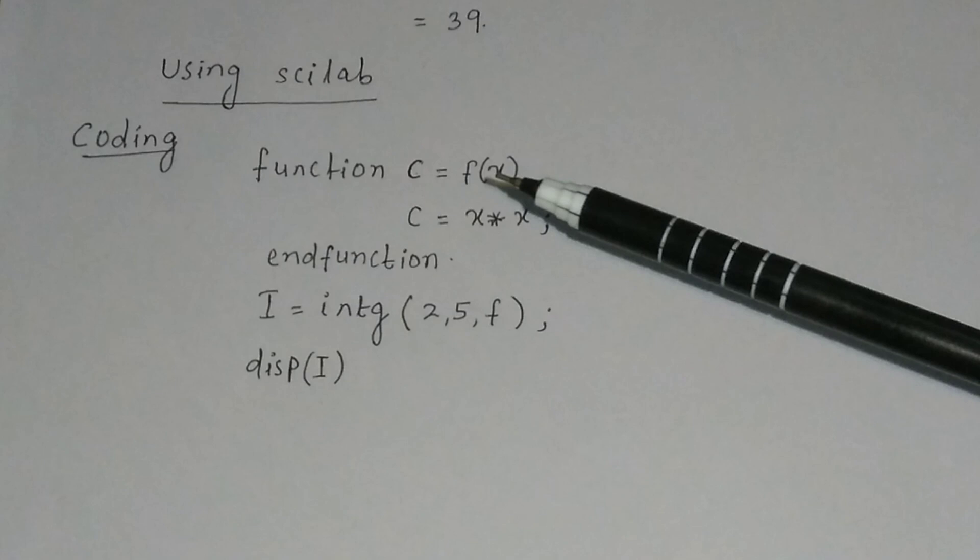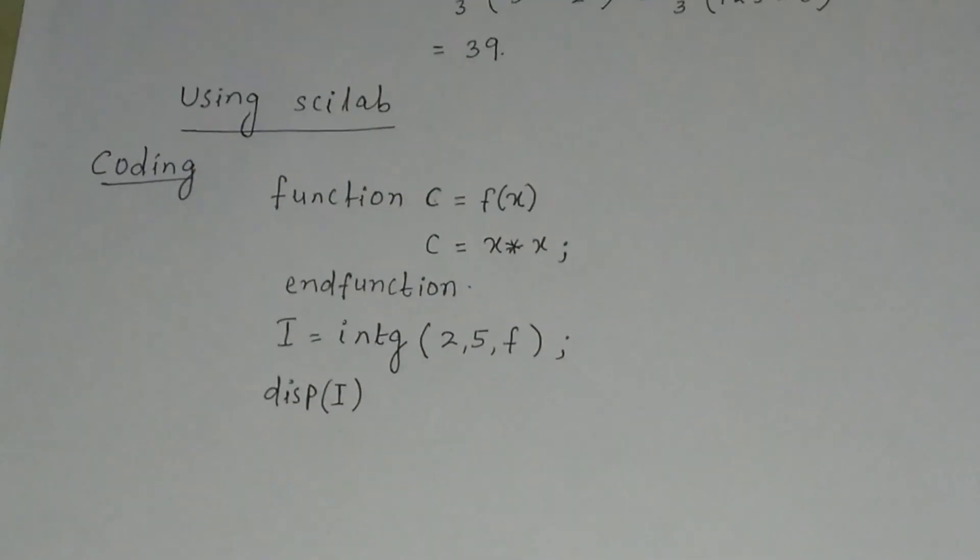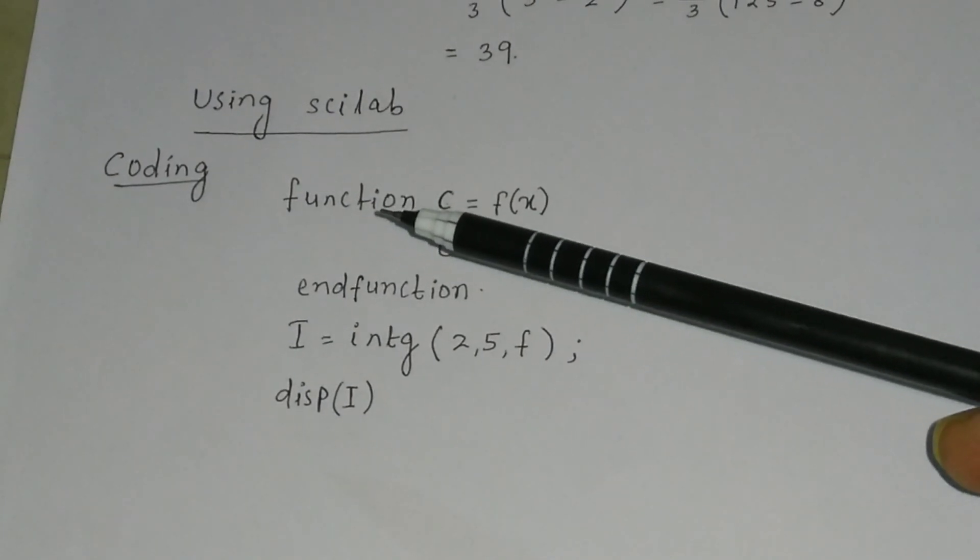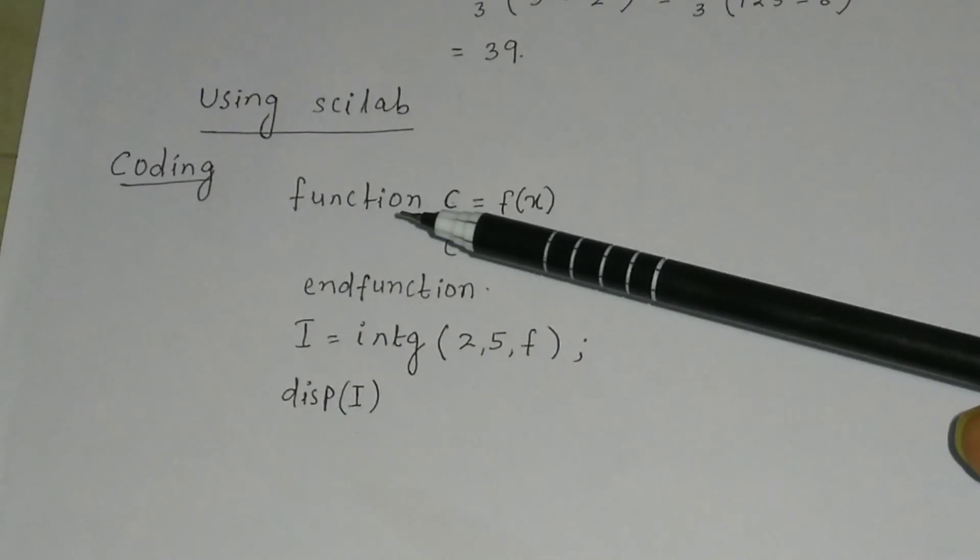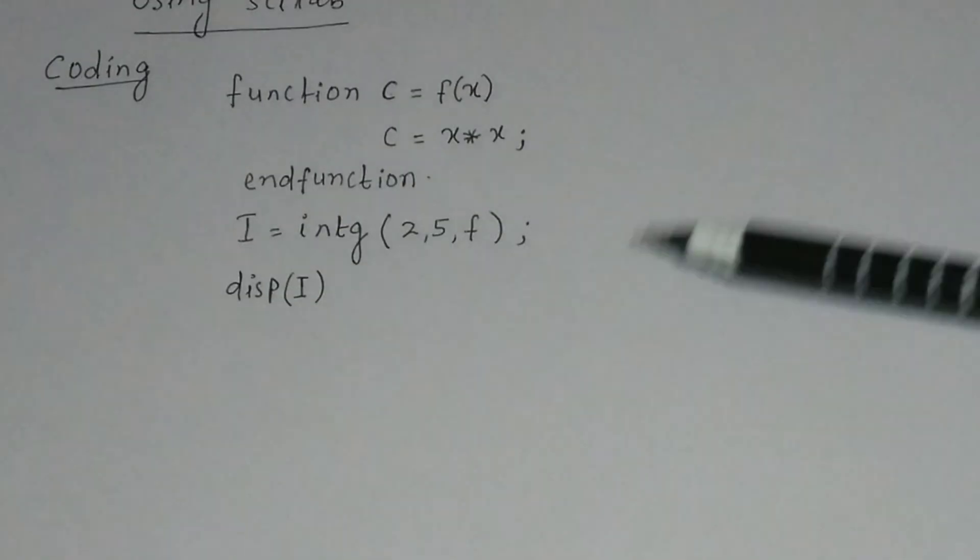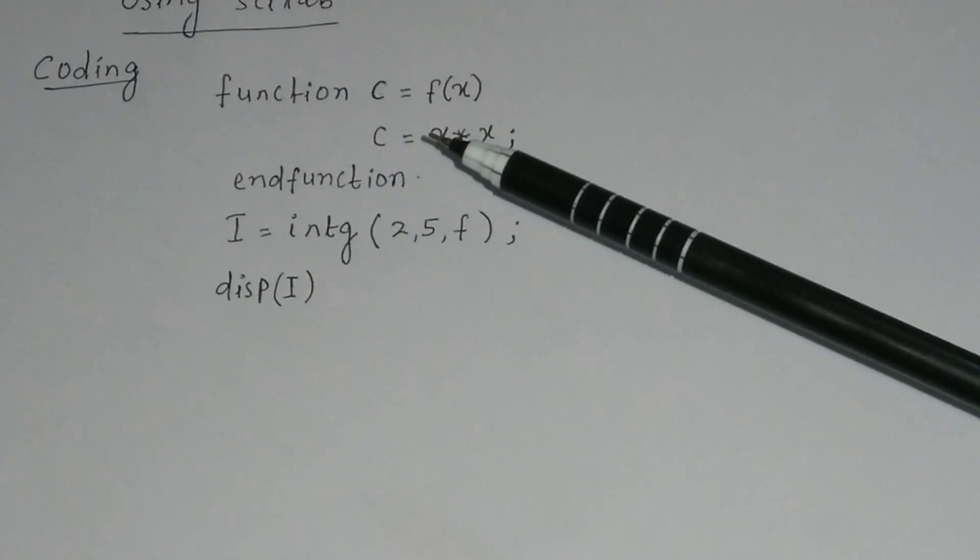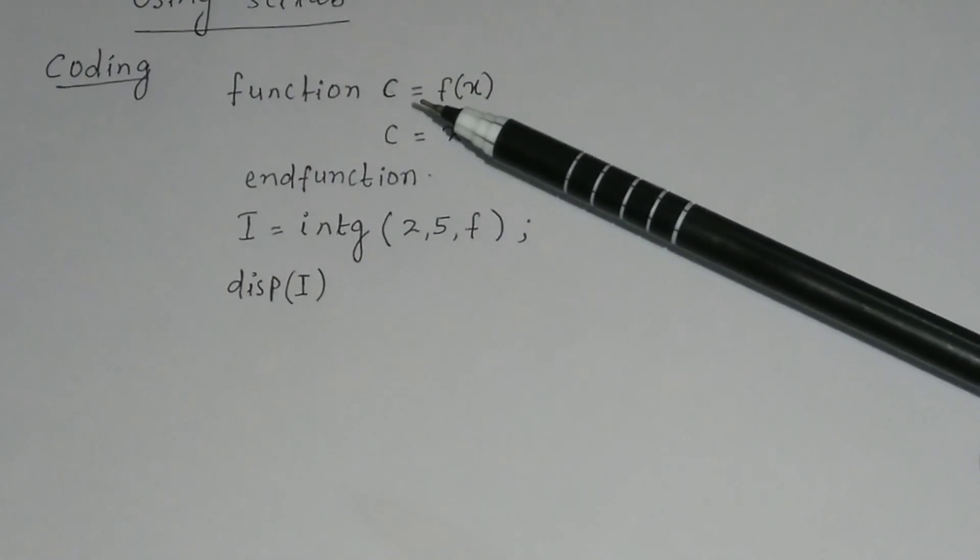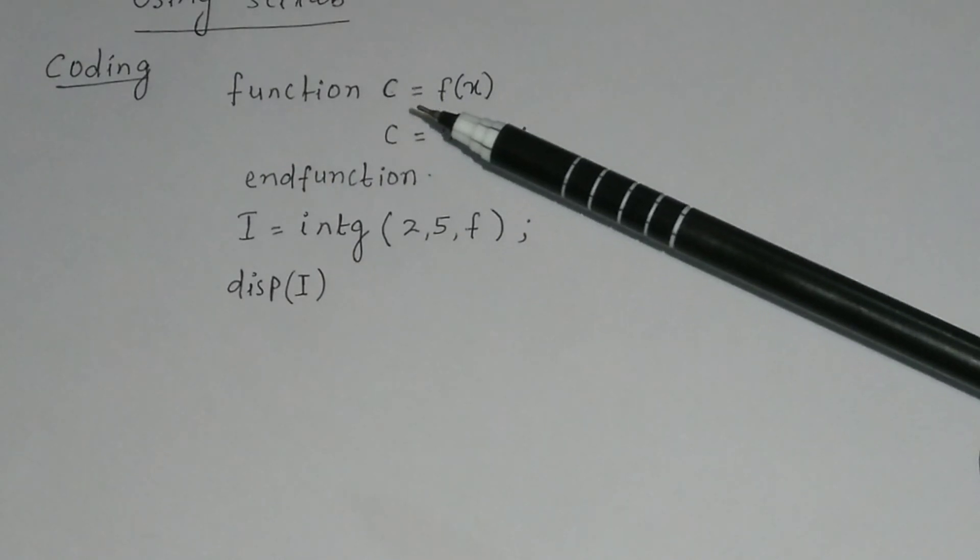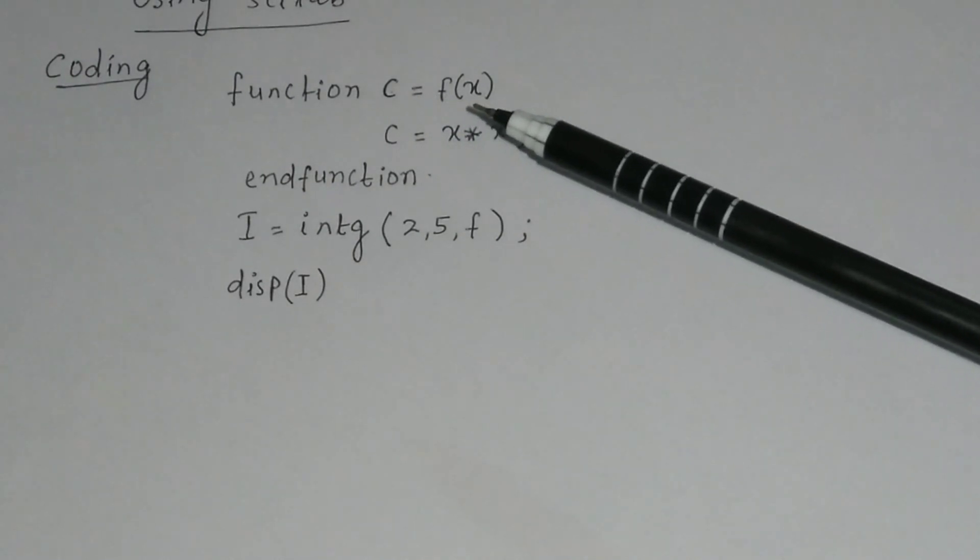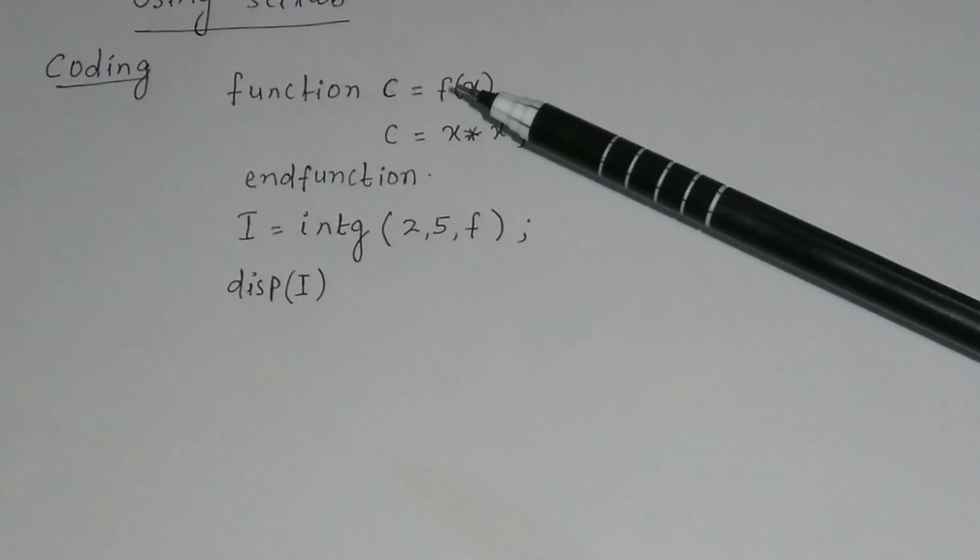Function c equal to f(x). So you first define a function. To define a function in Scilab, we use a keyword that is function. After writing the function, you have to write the output variable name. Here I have written the output variable name as c. Then you have to give an equal sign, then the name of the function. Suppose the name of the function I have given here f.